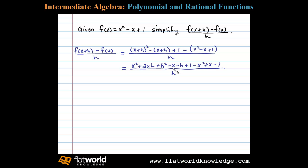Now at this point when we add like terms in the numerator, we see that x² and -x² add to 0, plus x and -x add to 0 as well, and plus 1 and -1 cancel. And so that leaves us with 2xh + h² - h in the numerator, all divided by h.